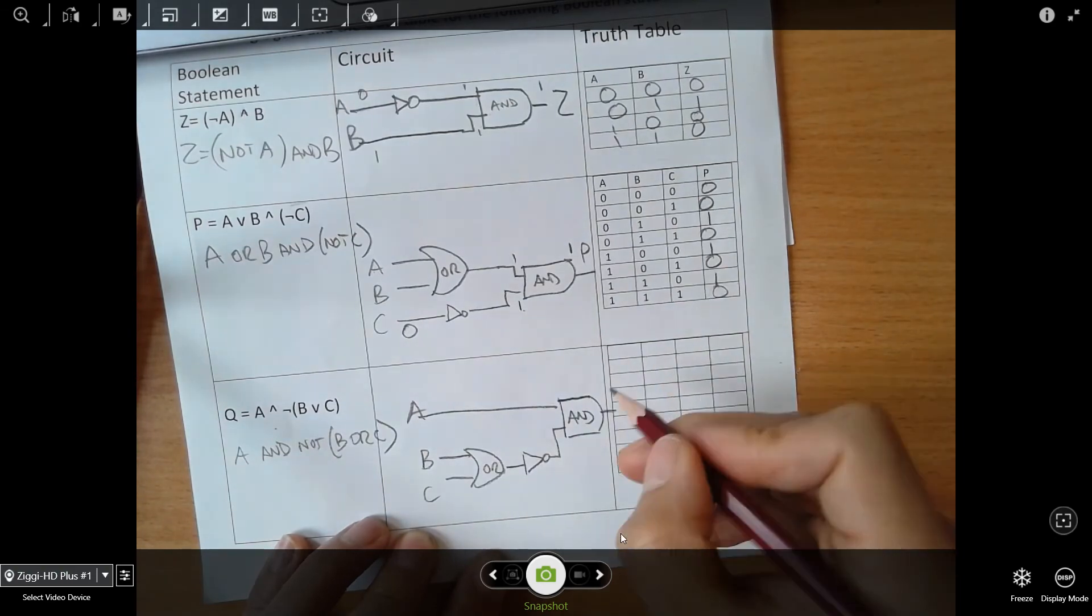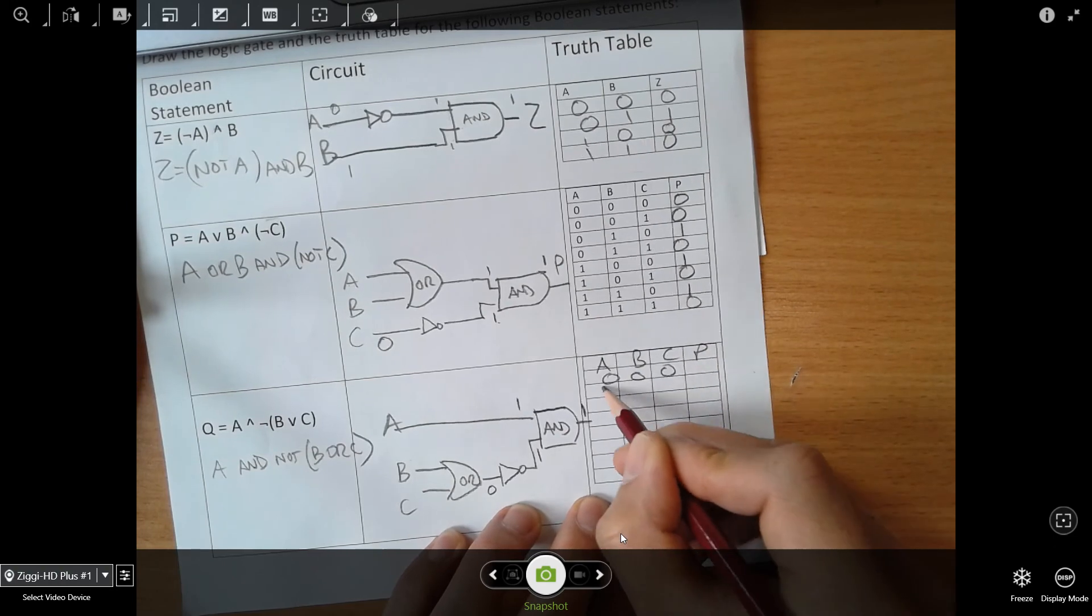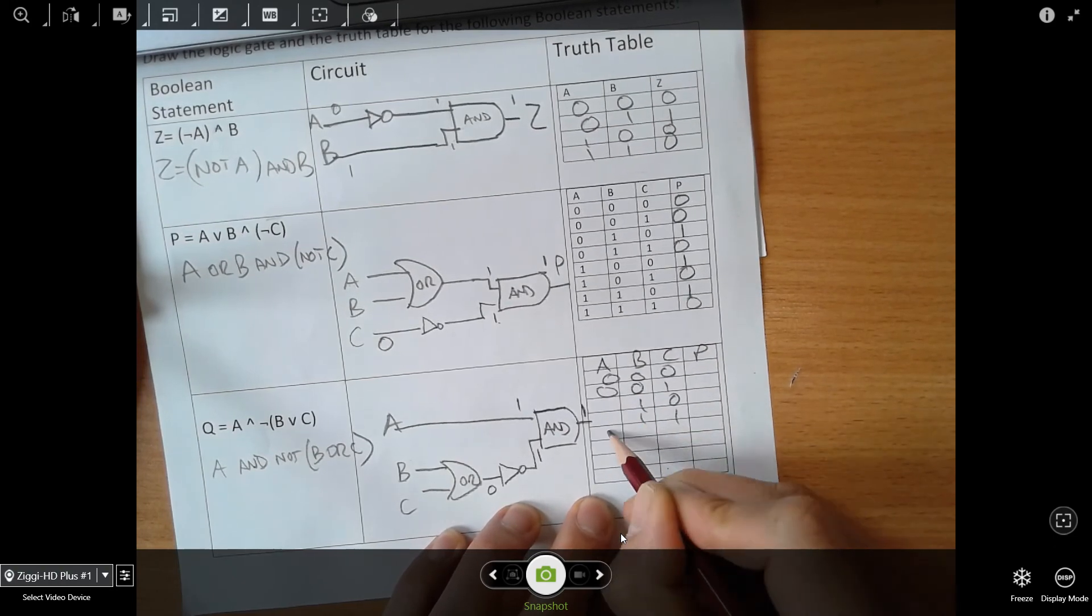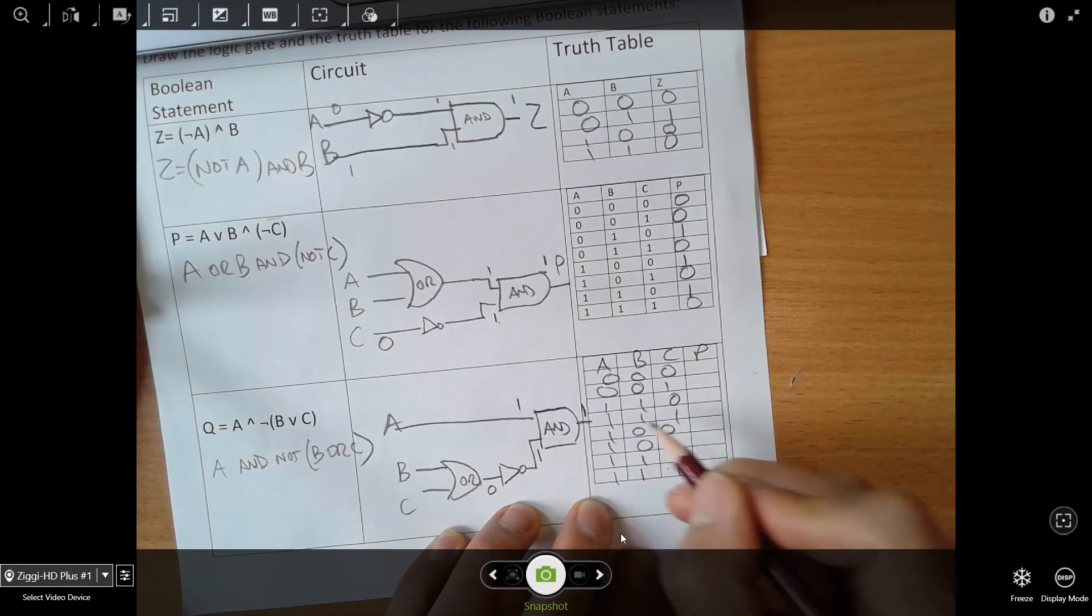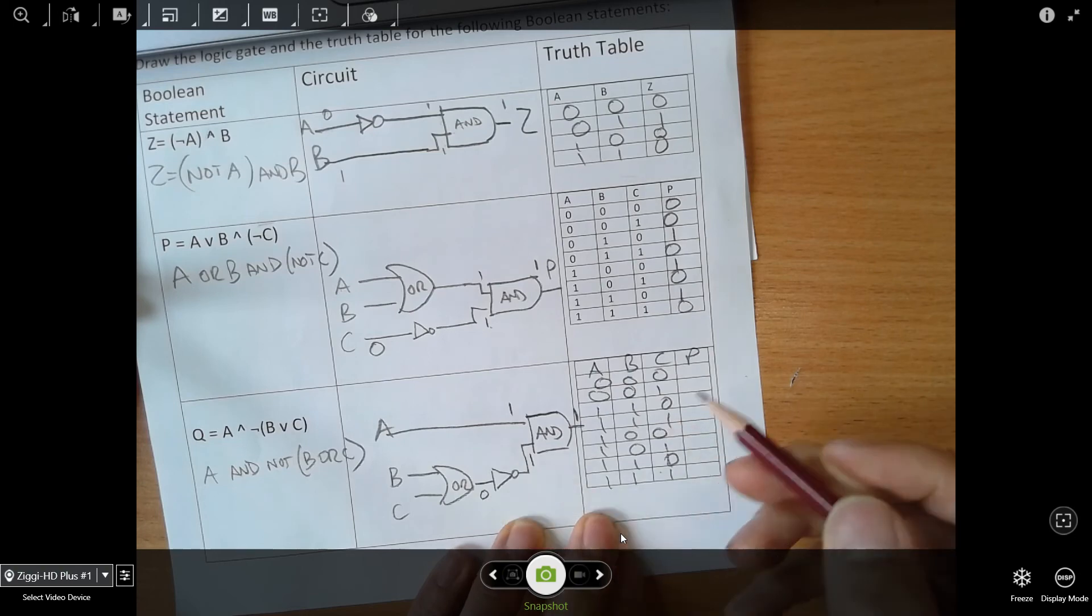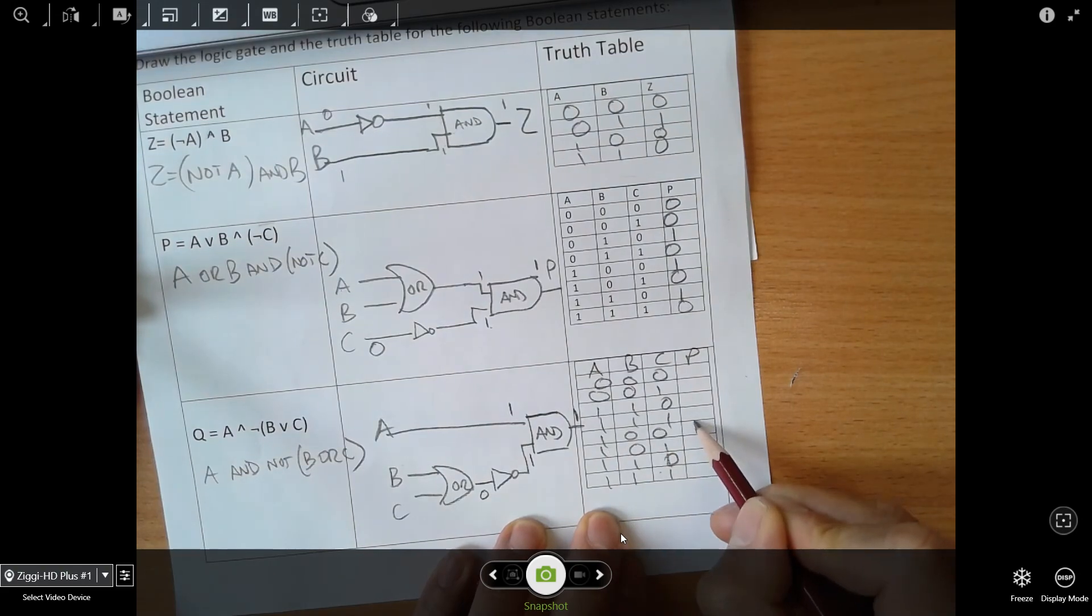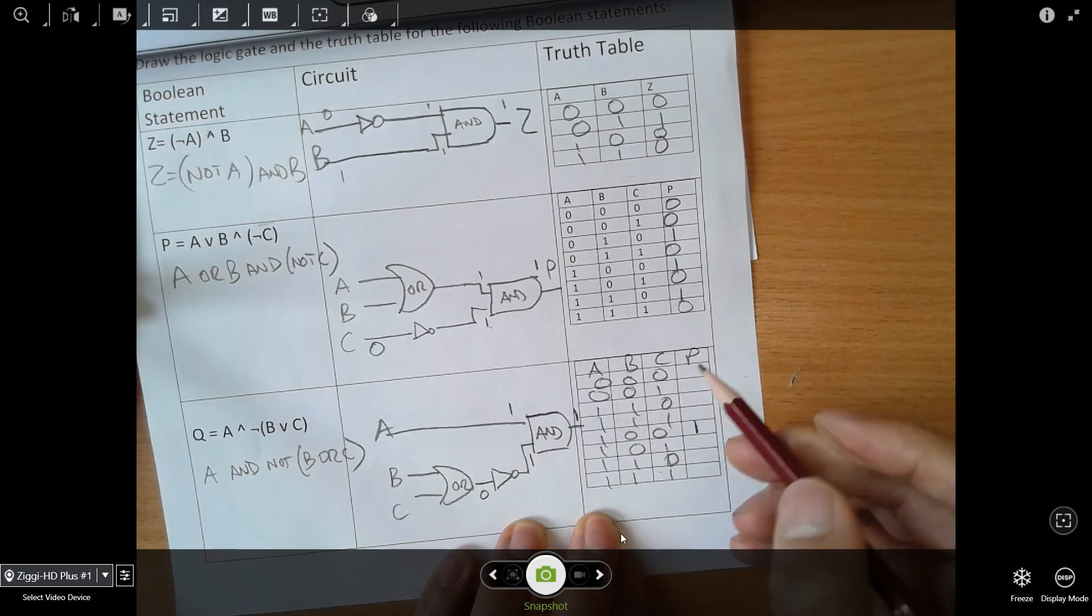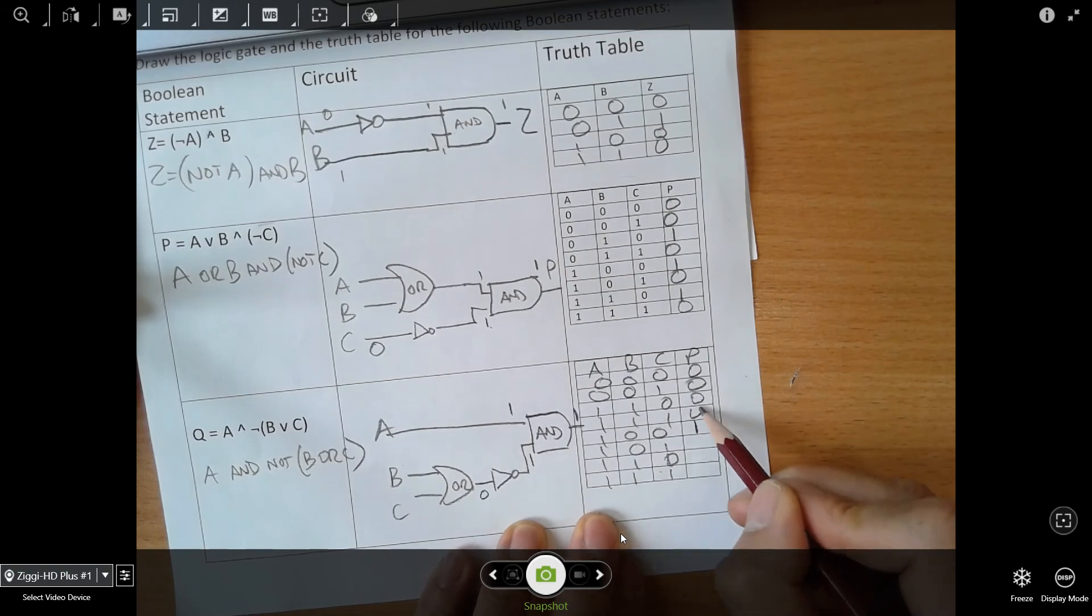Once again, to get 1 there, A has to be 1, that has to be 1, which means this has to be 0. So that means if we were to fill that out - 0,0,0, 0,0,1, 0,1,0, 0,1,1, 1,0,0, 1,0,1, 1,1,0, 1,1,1. A has to be 1 for it to work, and this has to evaluate to 0. So the only time that's going to work is when A is 1 and the other two are 0, there. Any other time, it's going to be off. Any time A is 0, obviously it's off, and any time that we've got a 1 coming through here, it's going to be off as well.